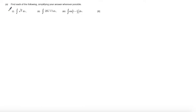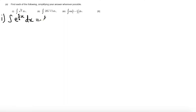In this question we're asked to find each of the following, simplifying our answer wherever possible. Starting with part i: integrating e to the 5 over 6x with respect to x. Since this is a standard function with a linear function embedded inside, I'm going to divide by the derivative of the inside function, dividing the coefficient 1 by 5 over 6.